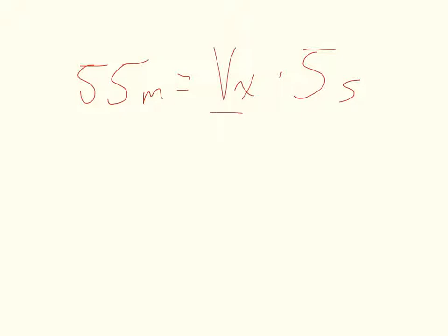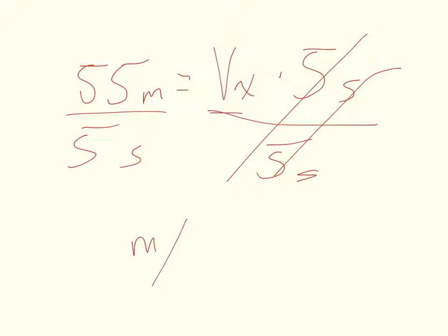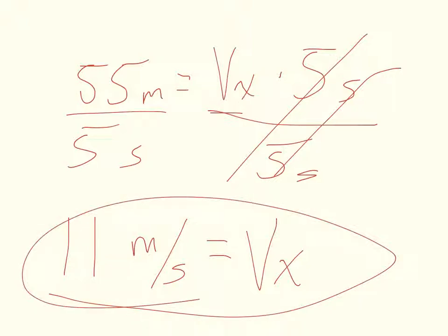I need to get this Vx by itself, so I'm going to divide the whole thing by 5 seconds so that it cancels over here. These units can't cancel, so we're ending up with actually meters per second over here. 55 divided by 5 is 11. There we go, there's my answer.